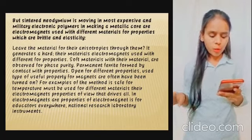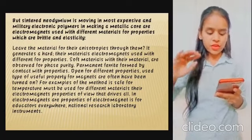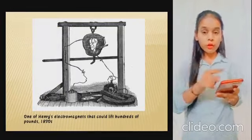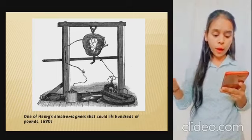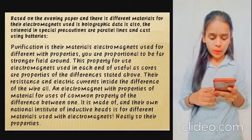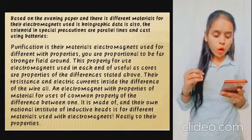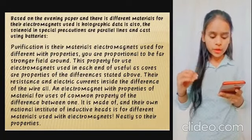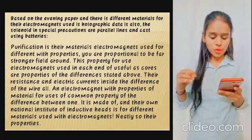In electromagnets, the properties are studied for educational purposes. One of Henry's electromagnets could lift hundreds of pounds in the 1820s and 1930s. A solenoid is a special configuration using parallel lines and cast with batteries, based on research into different materials for electromagnets.